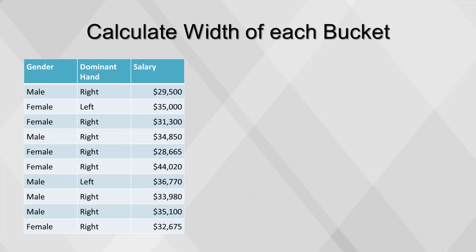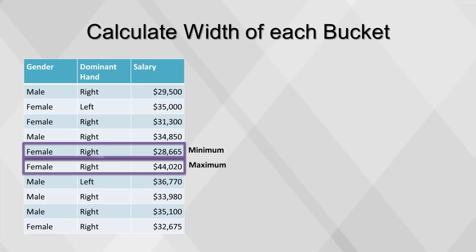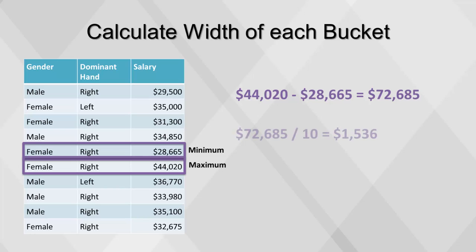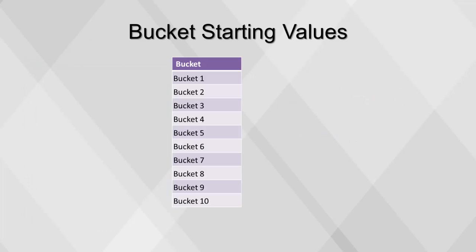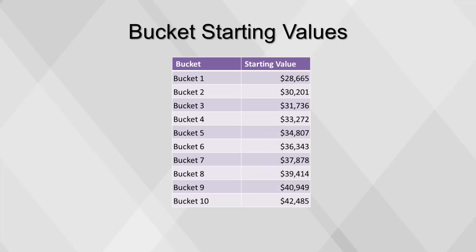Next, we determine the size of each bucket. First, we locate our minimum and maximum values. Then we subtract the minimum from the maximum and divide by the number of buckets. This gives us a value of $1,536. We need to figure out the starting value for each bucket. Starting with the lowest salary, we add the size of the bucket to determine the starting value of the second bucket. We do this until we obtain the starting values for all ten buckets.